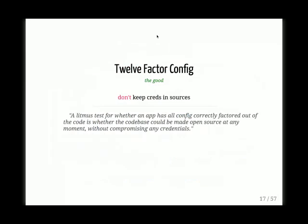But there are also some good parts of 12-factor config. For example, it says that you shouldn't keep credentials in source. One of the litmus tests they have is: if at any point your application becomes open-sourced, you shouldn't compromise any credentials. That's a good thing to keep in mind when you're checking in your sources.